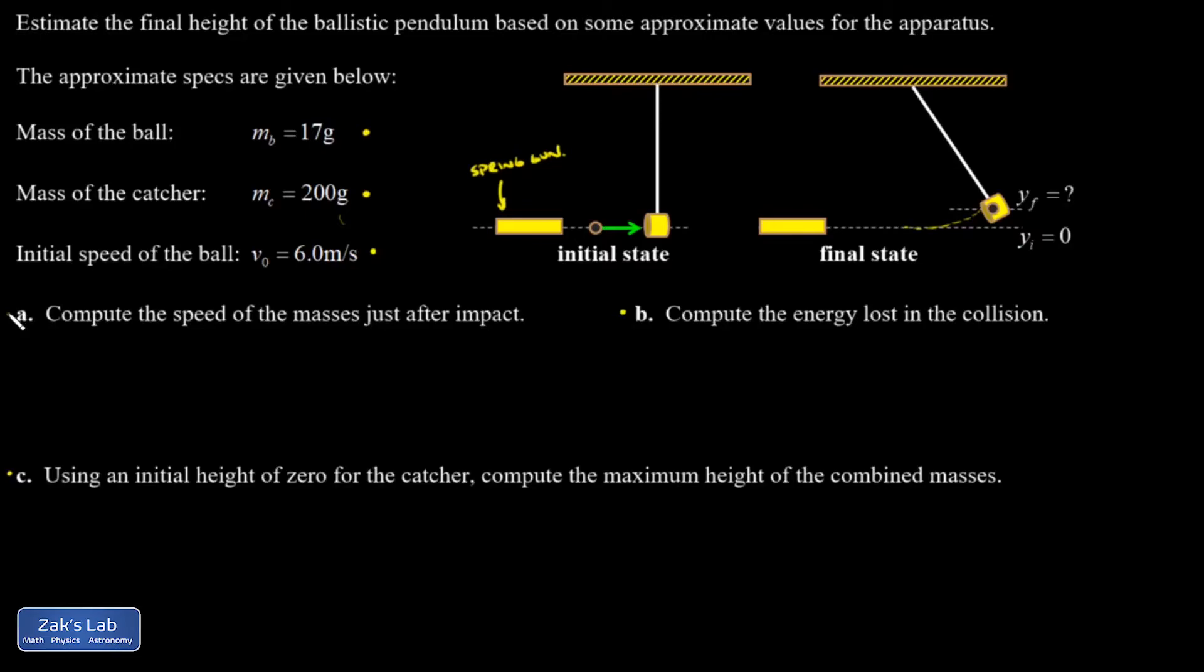Part A: Compute the speed of the masses just after impact. That's a momentum conservation problem. P initial equals P final. P initial is the mass of the ball, 0.017 kilograms, times initial velocity of 6 meters per second. P final is the sum of both masses, 0.217 kilograms, times the final velocity. Solving for v, I get 0.470 meters per second.